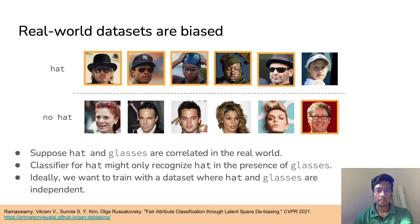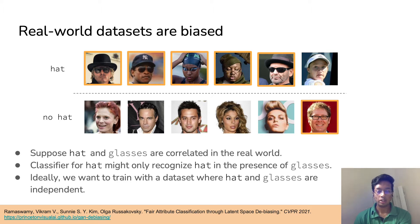In current datasets, certain attributes like gender tend to be correlated with certain tasks like cooking or coding. Now let's say we want to train a hat classifier. Suppose wearing hats is correlated with gender — then this classifier might pick up on gender cues rather than hat cues.